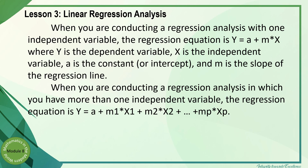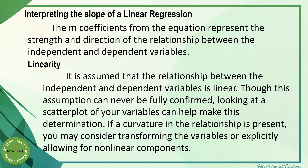In multiple linear regression, the goal is to find which x variable best predicts the y variable. In interpreting the slope of a linear regression, we use it to predict or determine the strength and direction of the relationship — the slope tells us whether the data goes up or down. Regarding linearity, it is assumed that the relationship between the independent and dependent variables is linear. We can test this assumption using a scatter plot.